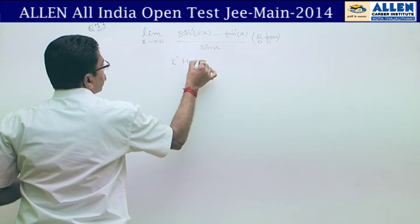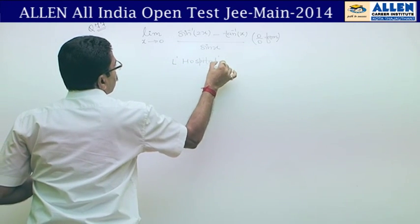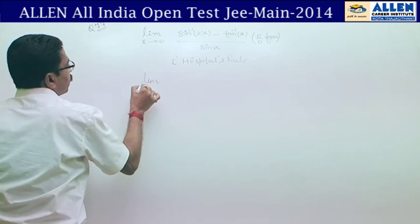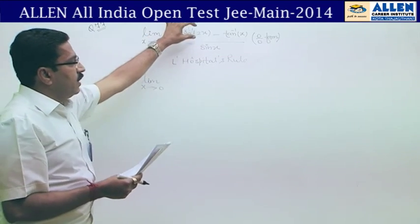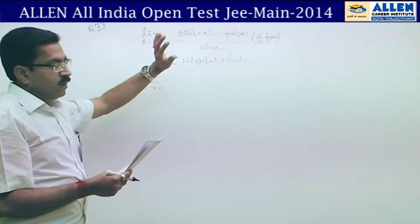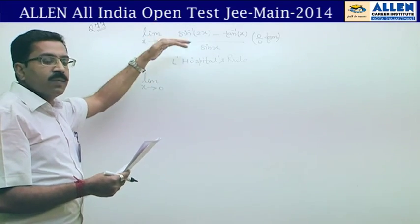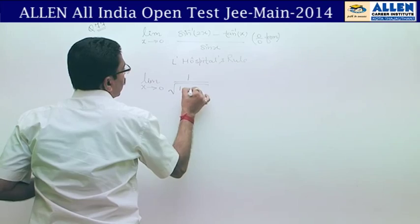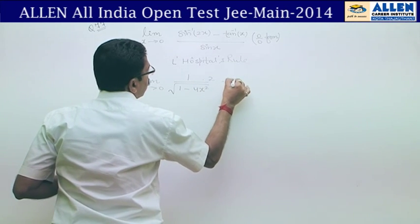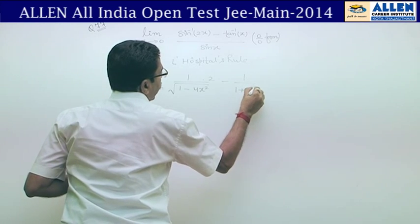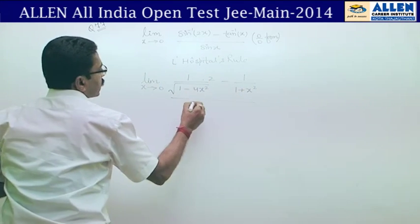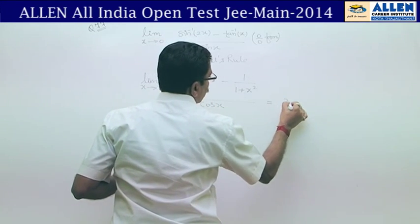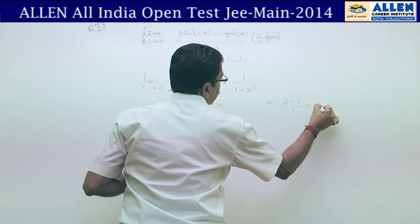Applying L'Hôpital's rule: differentiate numerator and denominator. Derivative of sin⁻¹(2x) is 1/√(1−4x²) × 2; derivative of tan⁻¹(x) is 1/(1+x²); denominator becomes cos x. Putting x = 0: (2 − 1) / 1 = 1. Answer is 1, option 3.